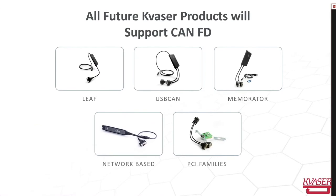Looking at the interfaces, here you see five types of interfaces from Kvaser. You have the LEAF, which is a one-channel USB interface, and USB CAN which has two channels so you can connect to two different CAN buses. There are Memorators which can be used as an interface or as a standalone logger to log information from the CAN bus. There are network-based interfaces like Wi-Fi or Ethernet, and the PCI family which uses boards inside the computer connected to the PCI bus.